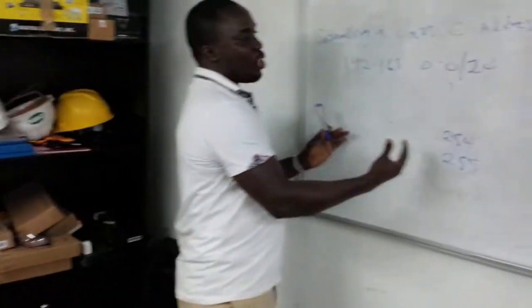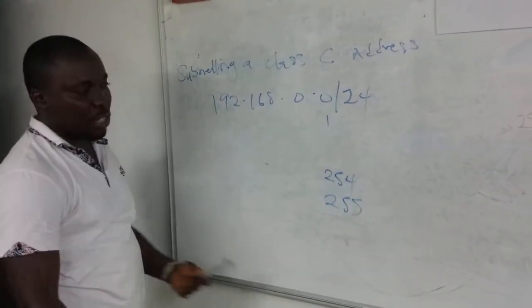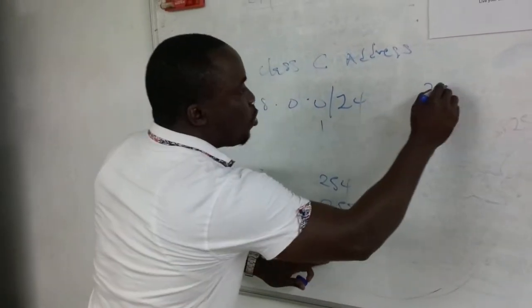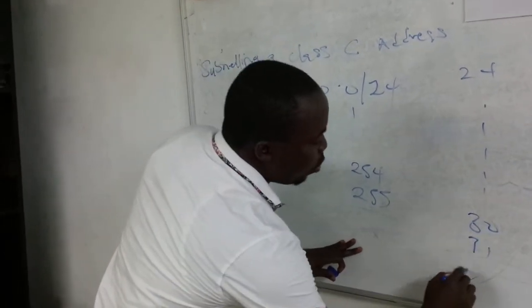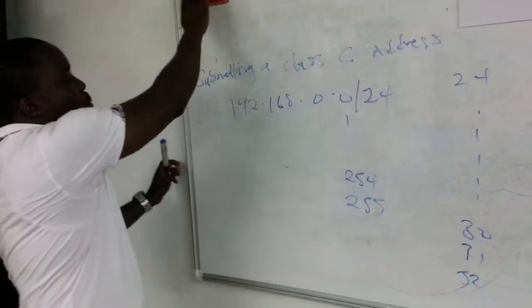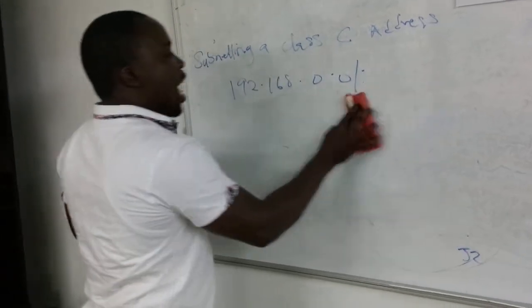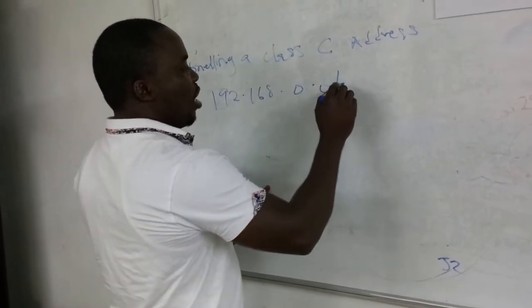Subnetting actually starts when you want to break this network into 2, 3, 4, depending on the subnet mask you're giving. For Class C, you can do from 24 down to 30. We cannot do 31, we can't do 32. I'll give you a reason for that. Let's say we want to subnet the Class C IP address with a subnet mask of /27.